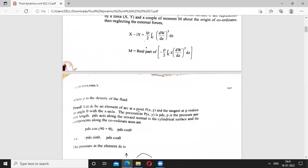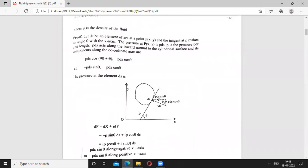We have to prove this. Let DS be an element of an arc at a point P and tangent at P makes an angle theta with the X-axis. The pressure at point P is PDS.